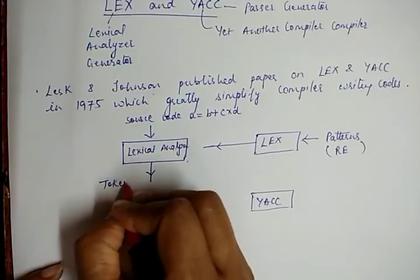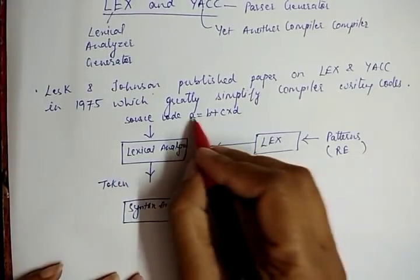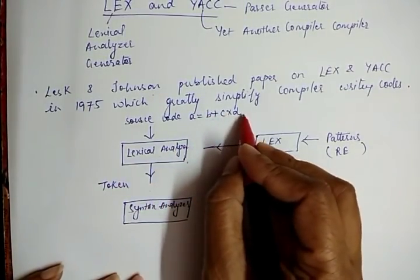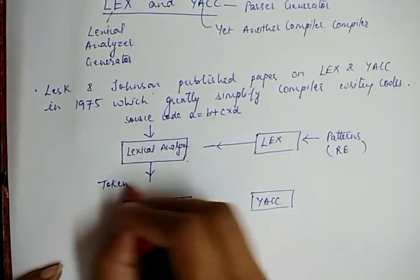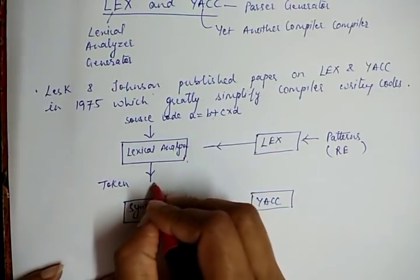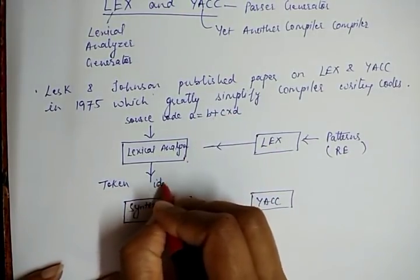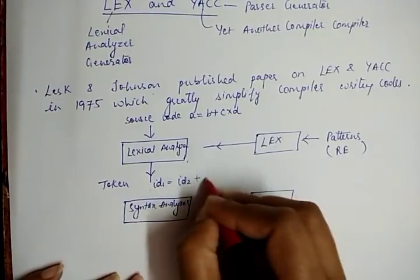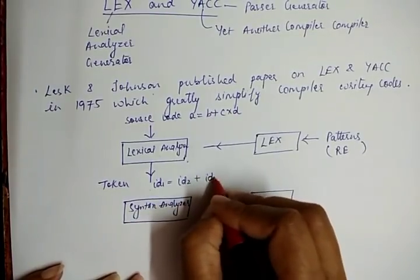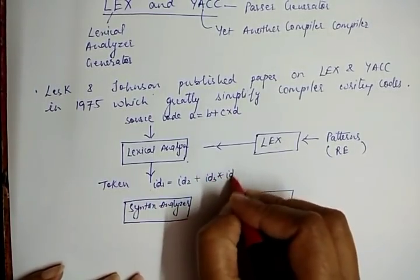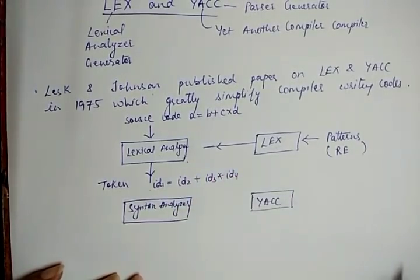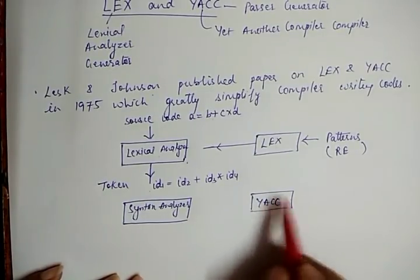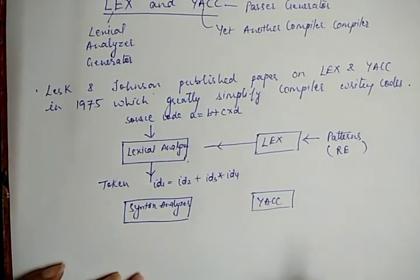For example, if we have a source code like a = b + c * d, then the tokens are in the form of id1 equals id2 plus id3 times id4. Now, what is the function of Yacc here?